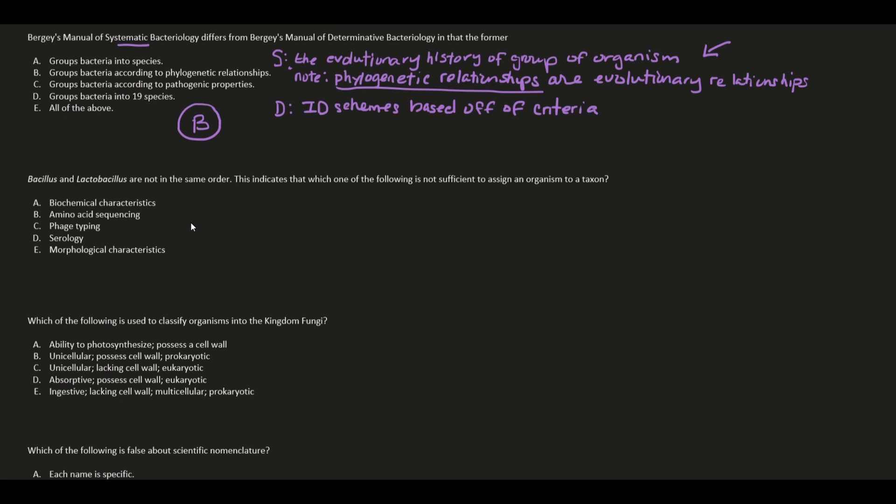Bacillus and Lactobacillus are not in the same order. This indicates that which one of the following is not sufficient to assign an organism to a taxon? A, biochemical characteristics; B, amino acid sequencing; C, phage typing; D, serology; E, morphological characteristics. Biochemical characteristics allow you to know the characteristics of microbes by biochemical testing, and these tests provide insight into the species' niche in the ecosystem.